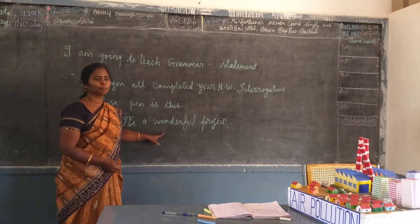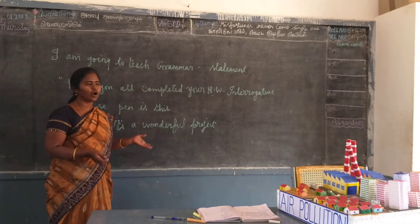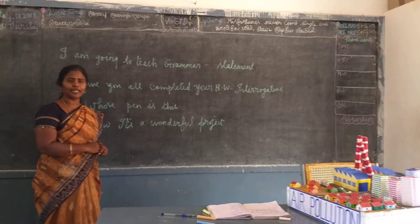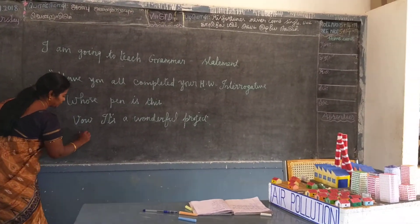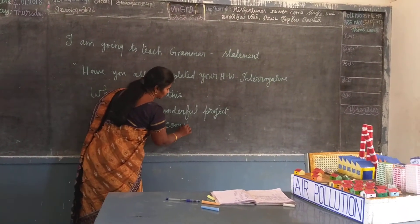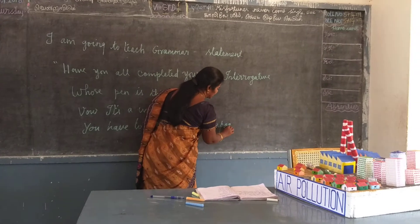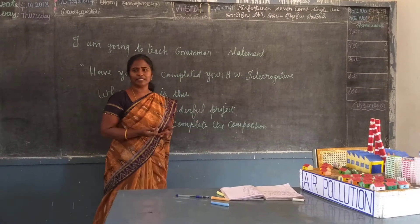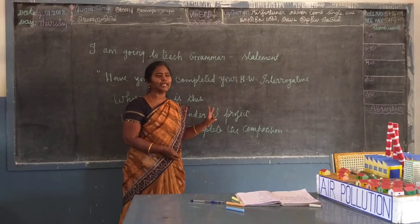What type of sentence is this? Exclamatory sentences. What do you mean by exclamatory? A statement of strongly expressed feelings. And if anybody didn't complete any of the work or composition, what did I say? You have to complete the composition notebook for this month. What type of sentence is this? Order. It is order, or request. Sometimes we order, sometimes we request. These two types of sentences are called imperative sentences.